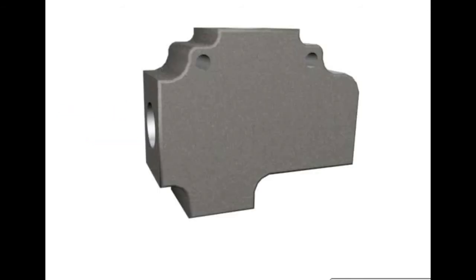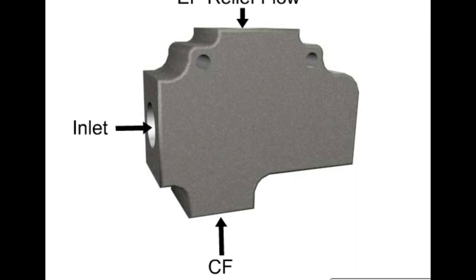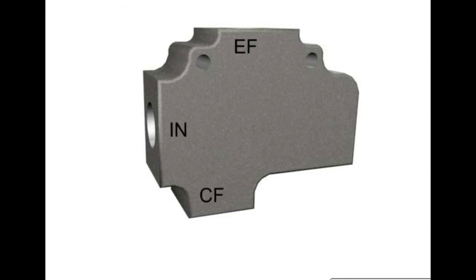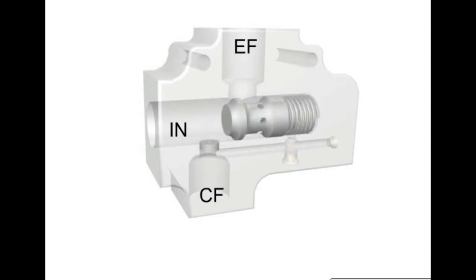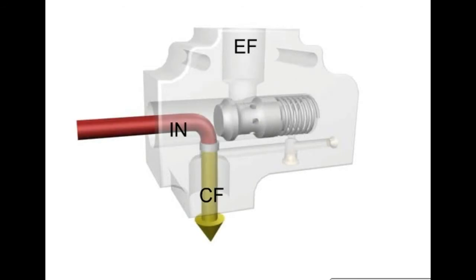This is a pressure compensated bypass flow control. Bypass flow controls are often used for priority flow dividing applications. The primary components are the housing, the main spool with a metering orifice, the spool biasing spring, and a relief valve. The metering orifice controls the amount of flow to the priority circuit. The biasing spring holds the spool to the left, blocking the flow path to the excess flow port.